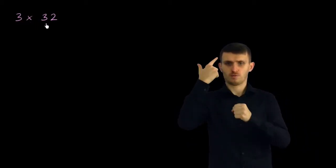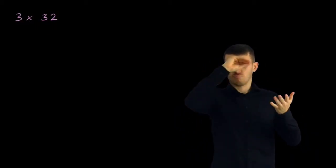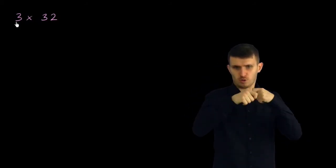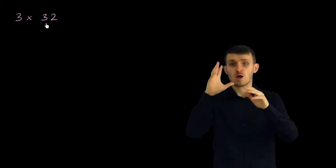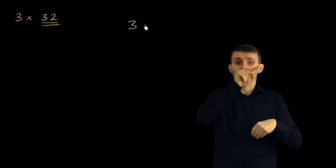Let's try to calculate 3 times 32. And I like to rewrite it. This is one way of doing it. I like to rewrite it where I have the larger number on top. So in this case, it's 32.